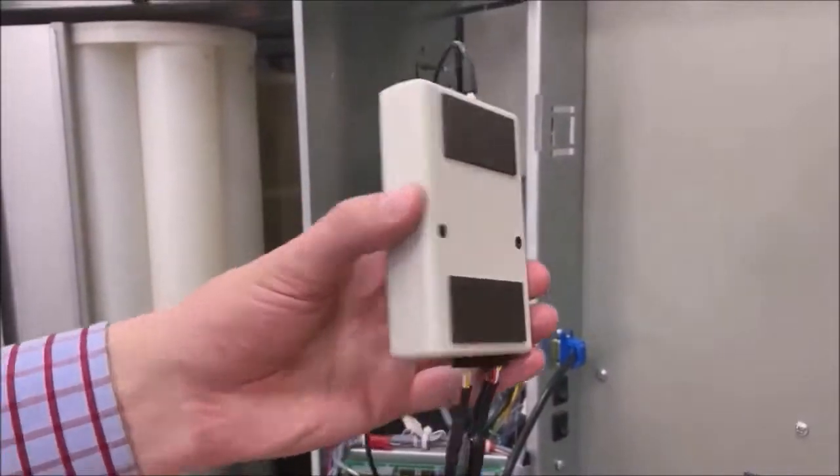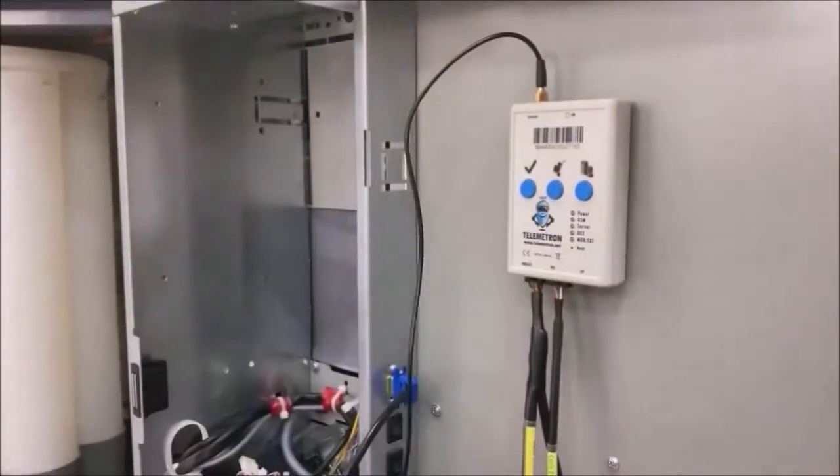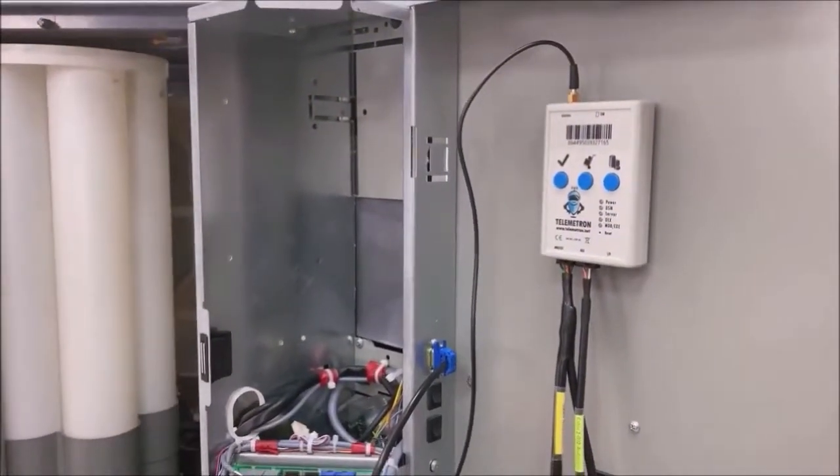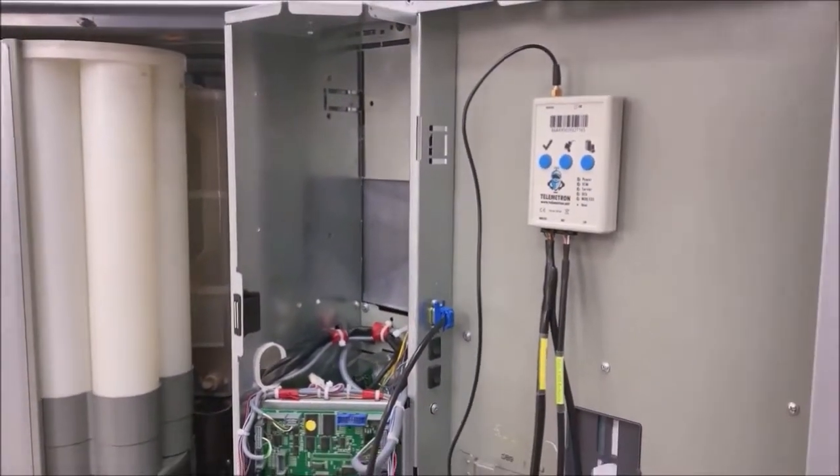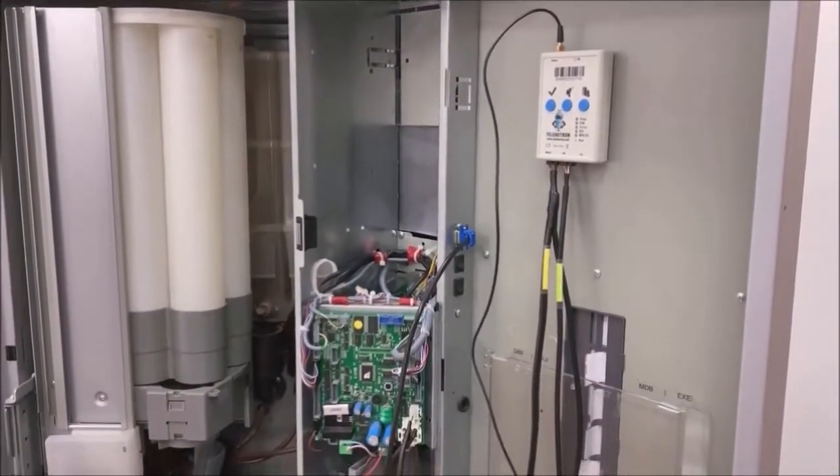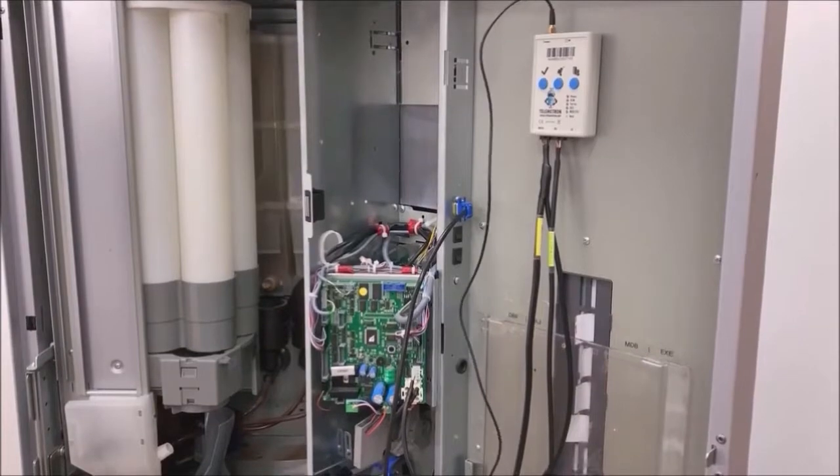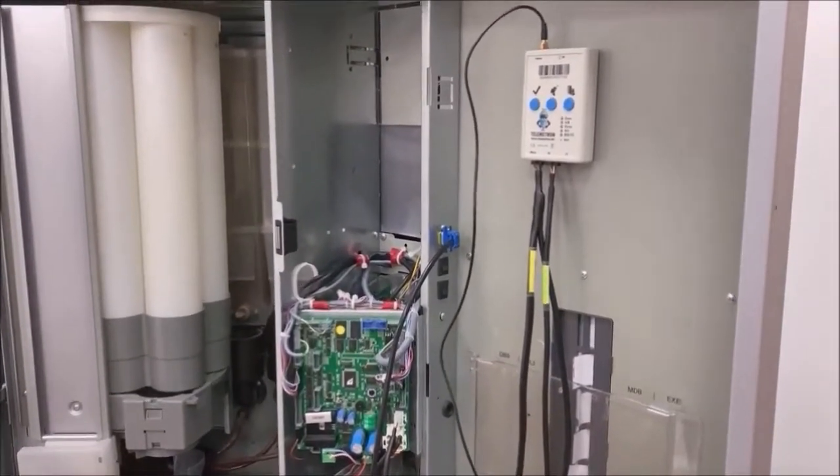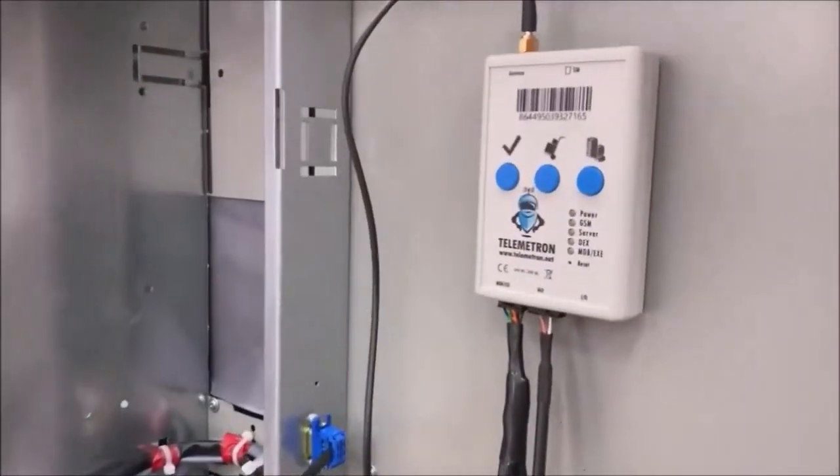The modem is installed on the machine with magnetic holders. Install the modem so that when you open the door the cables are not stretched or bent. The buttons and LEDs of the modem should be accessible and clearly visible to an operator who maintains the machine.